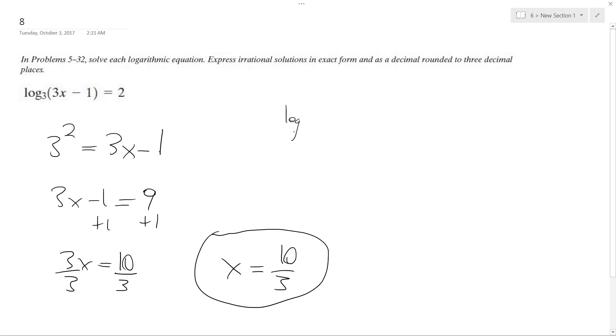And if you think about that, log base 3 of 10 over 3 times 3 minus 1 equals 2. We cancel this out, we get 10 minus 1 which is equal to 9.